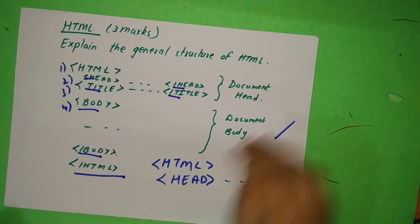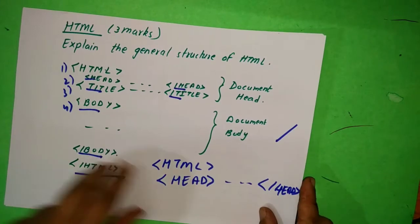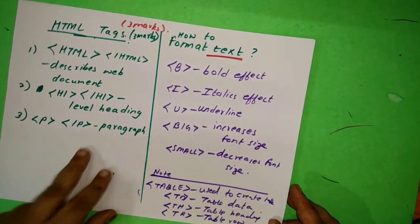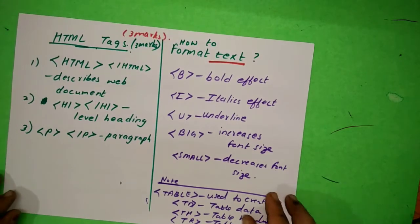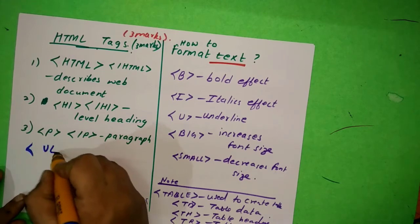Not anywhere you want. So till then, this is called as document head and this is called as document body, which is easy. It's only for three marks. If you get, you can get three marks. This is a very common question: HTML tags.